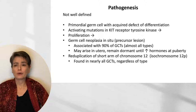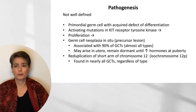Another factor important in the pathogenesis, though not well understood, is reduplication of the short arm of chromosome 12 through isochromosome 12P. This is found in nearly all germ cell tumors, regardless of type.